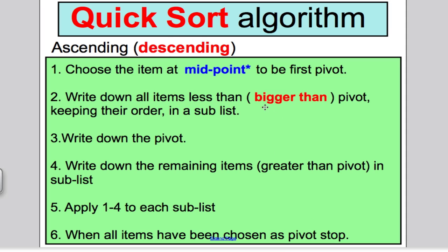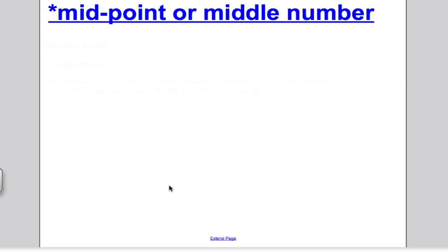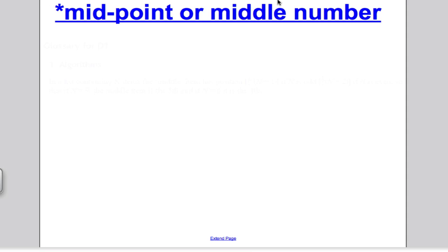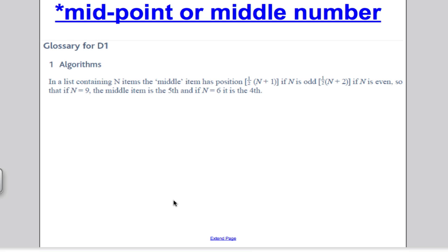Now, the midpoint or middle number. This is what it says in the specification or in the glossary. It says that in a list containing n items, the middle has positioned a half n plus 1 if n is odd, or a half n plus 2 if n is even. So if n is 9, the middle number is the fifth, and if n is 6, it's the fourth.